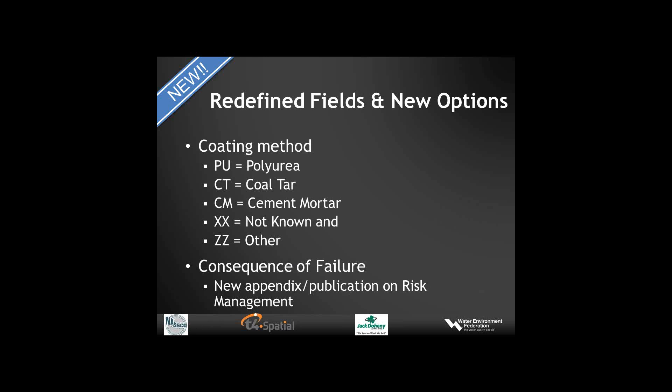We have redefined fields and new fields for coding methods of manholes or other structures: PU for polyurea, CT for coal tar, CM for cement mortar, XX for not known, and Z for other. Jim is going to spend time on the new appendix including a risk management module. So we have added for manholes as well the consequence of failure code to calculate both consequence of failure for structures—manholes and other access type points—alongside the likelihood of failure for manhole structures.